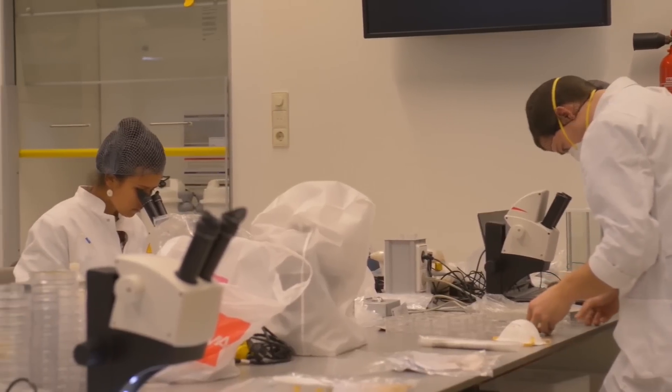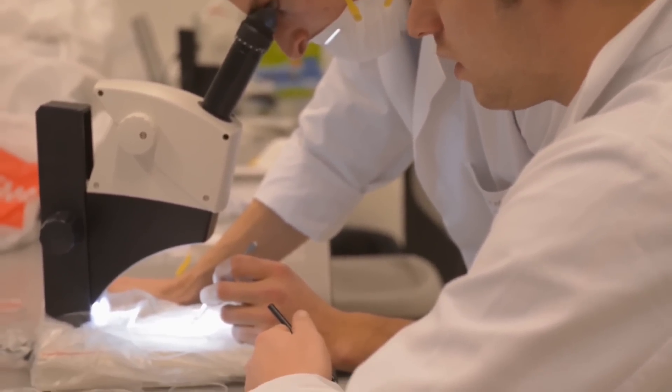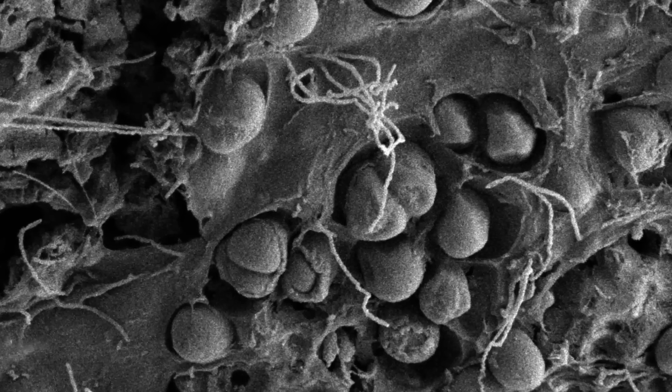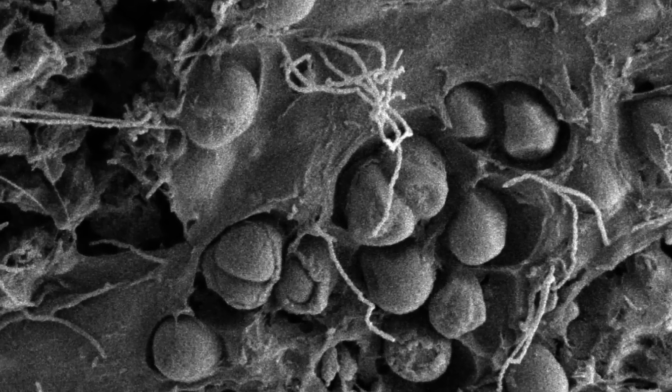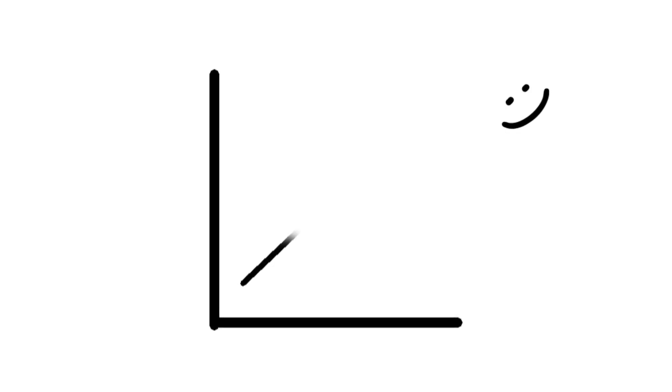But simply collecting the plastic isn't enough. We can take this even further by using naturally occurring bacteria that can eat plastic. Adding these microbes to the barriers will drastically increase their efficiency.